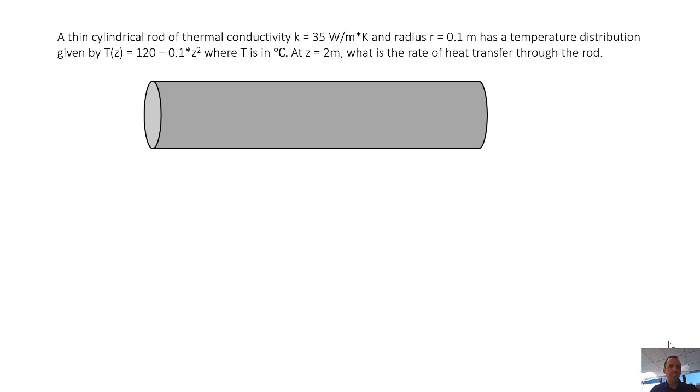Okay, let's look at another example problem. This one states that we have a thin cylindrical rod of thermal conductivity k equals 35 W/m*K and radius r equals 0.1 m. It has a temperature distribution given by T(z) = 120 - 0.1*z², where T is in degrees Celsius and z is in meters. At z = 2m, what is the rate of heat transfer through the rod?